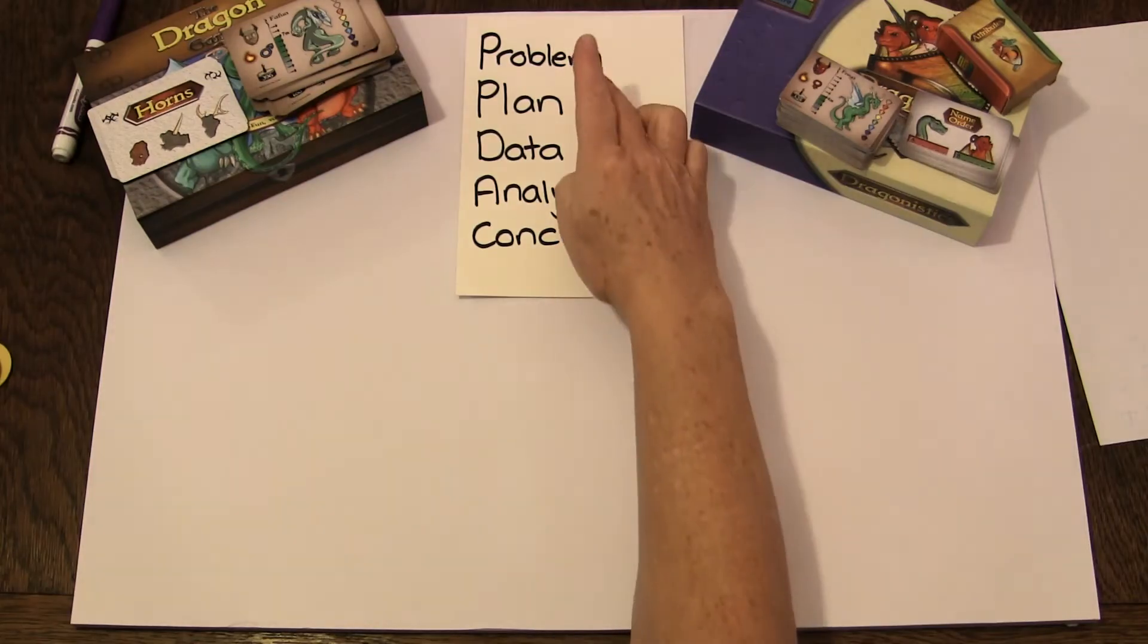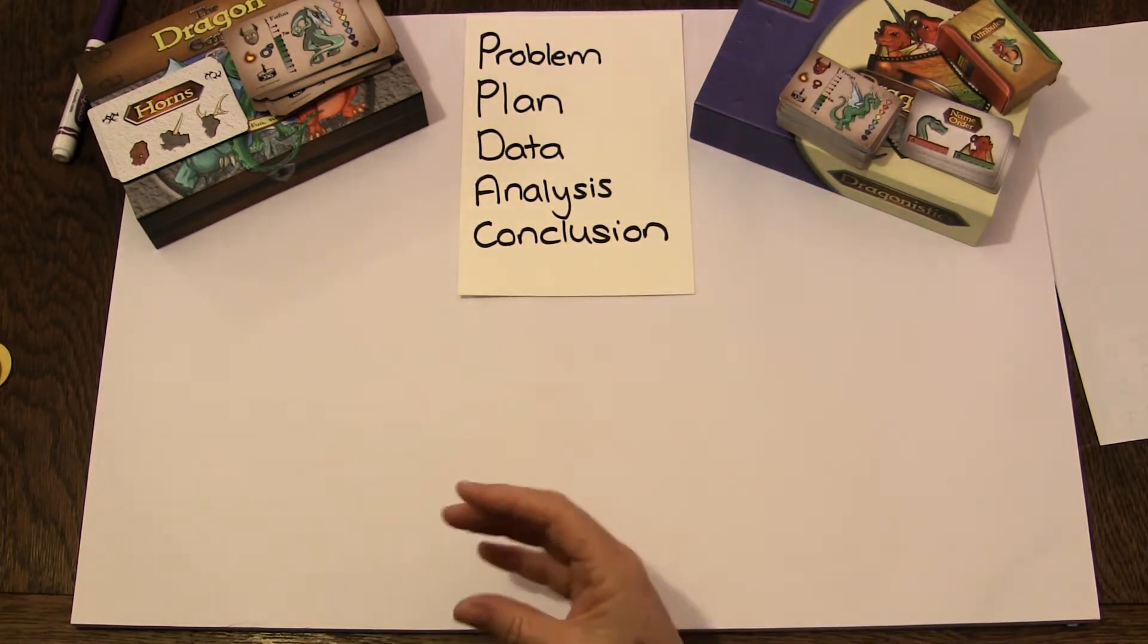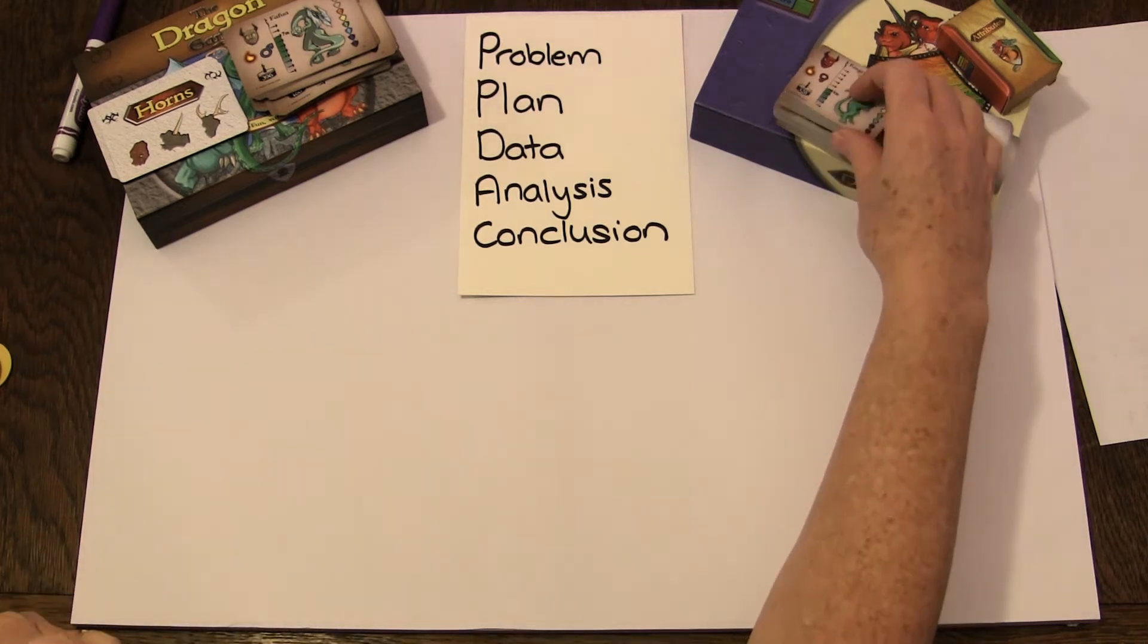The Statistical Inquiry cycle is Problem, Plan, Data, Analysis, and Conclusion. And you can use that structure for children to do an analysis of whatever they find interesting.